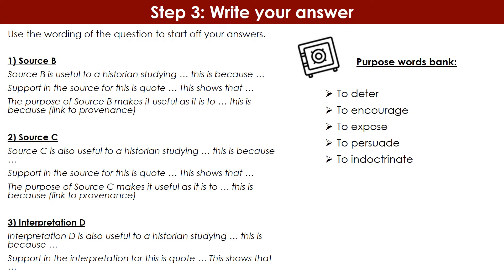Students always ask: should we bother writing about interpretation D if we can't do the purpose and therefore can't get the very top marks from it alone? My answer is: if you only do sources B and C, and something goes wrong — you misunderstand or misread part of it — you've got no safety net. If you don't analyse the inference of interpretation D and back it up with a quote, you're in trouble if B and C go wrong. Always do interpretation D, provided you have the time, because it serves as a safety net and is good history — it helps your understanding of the focus.